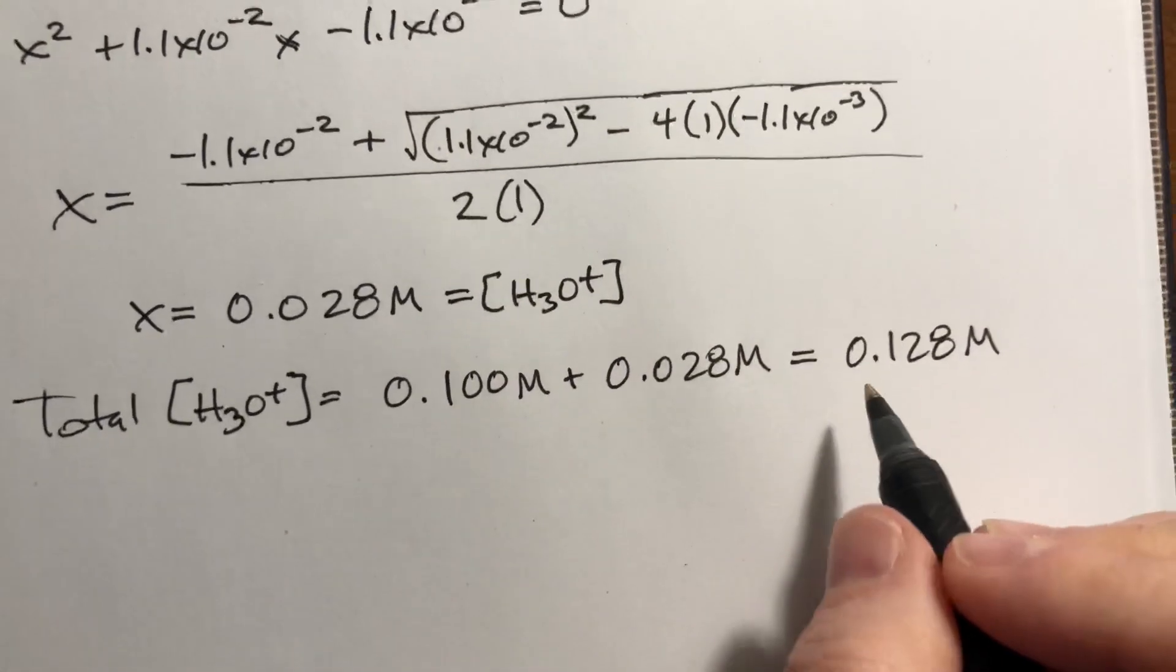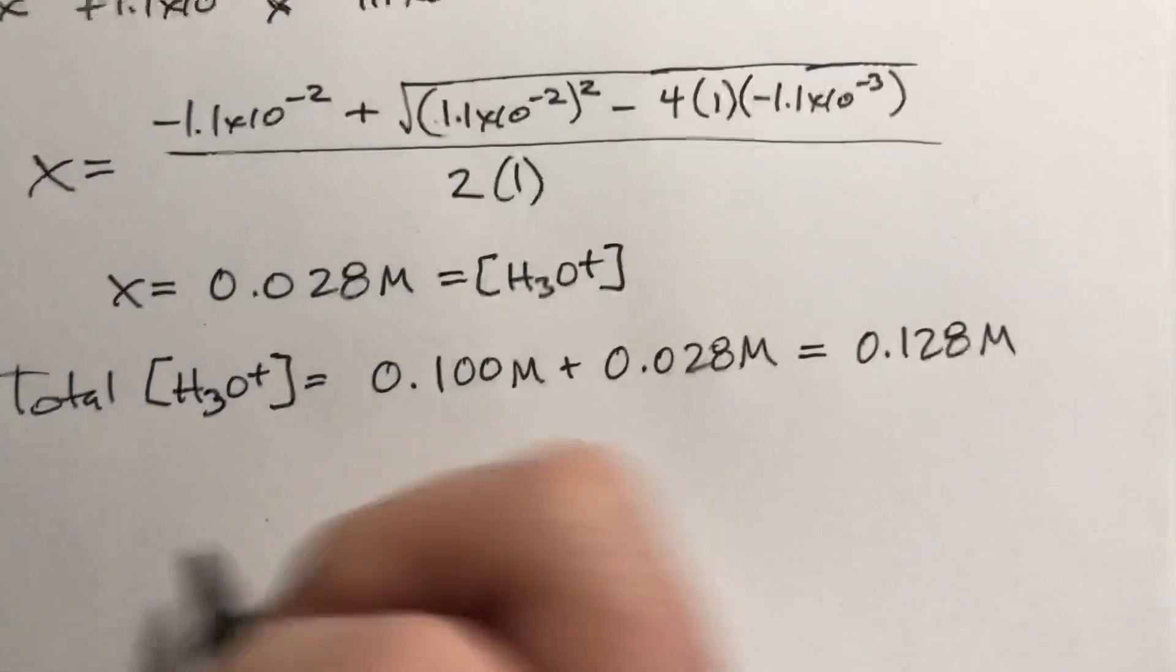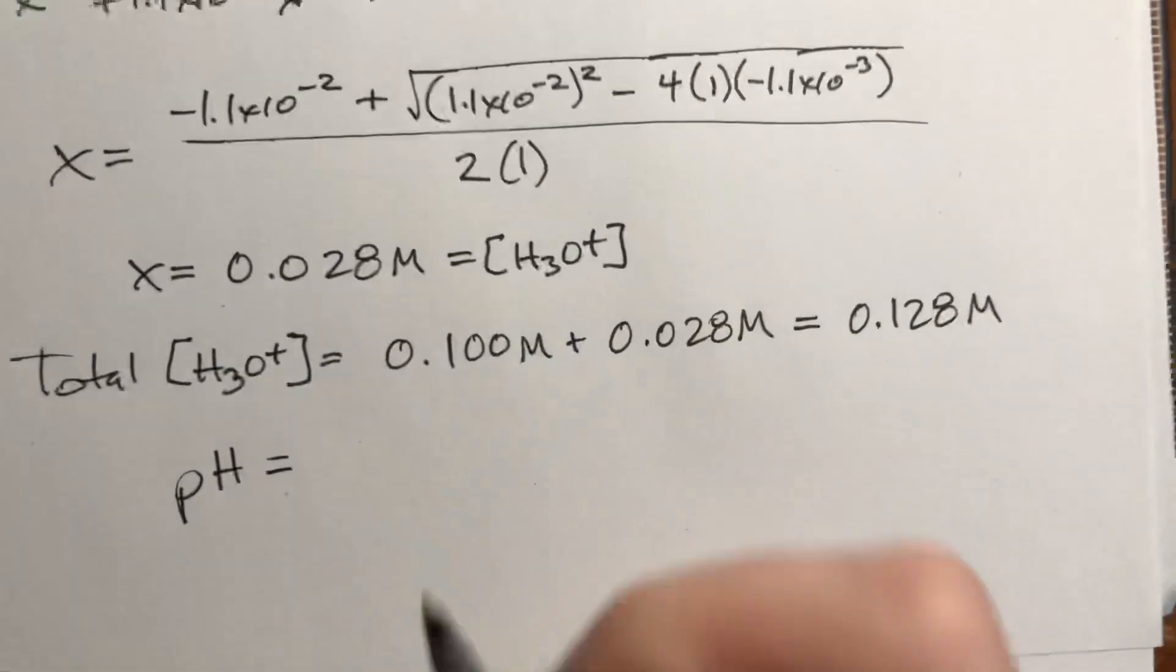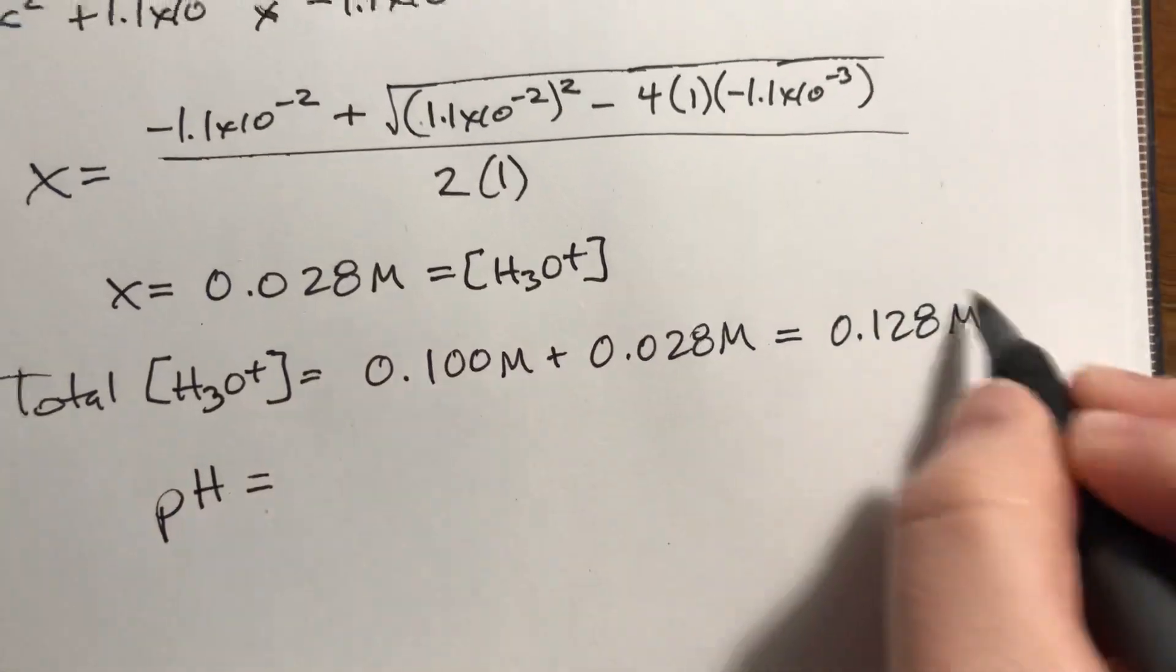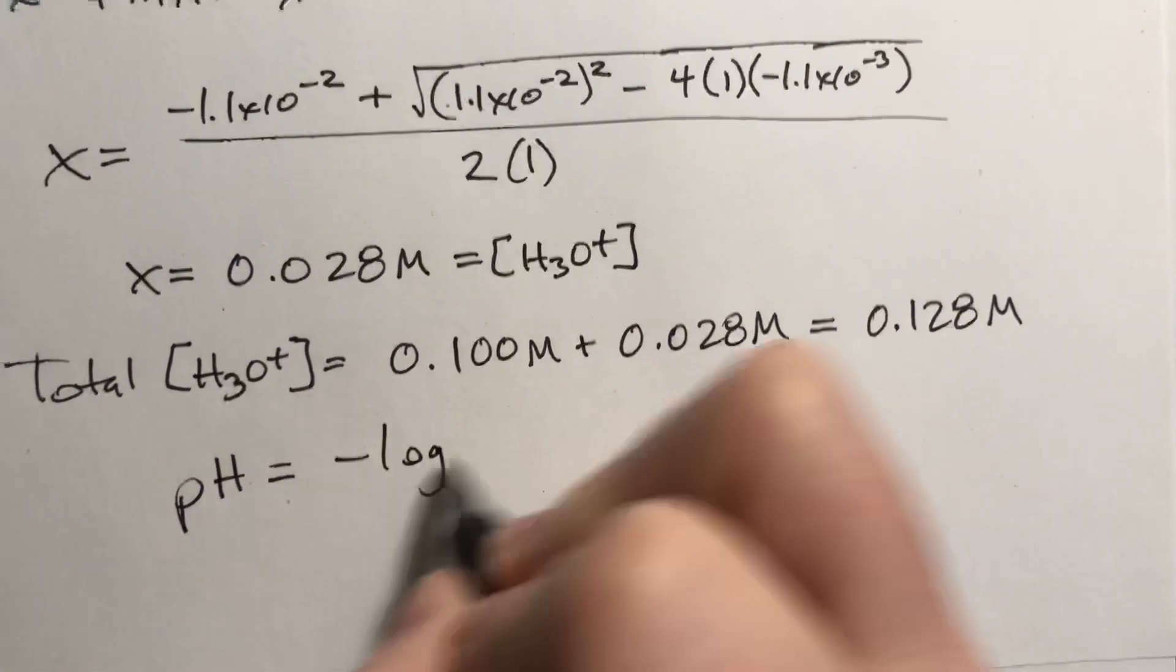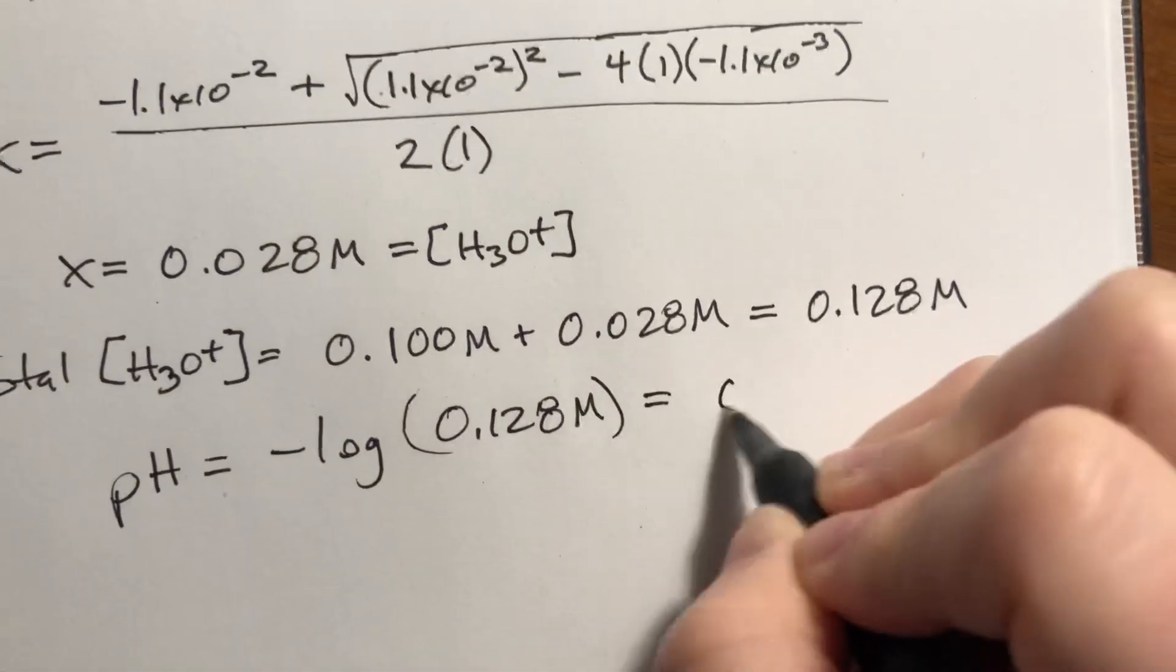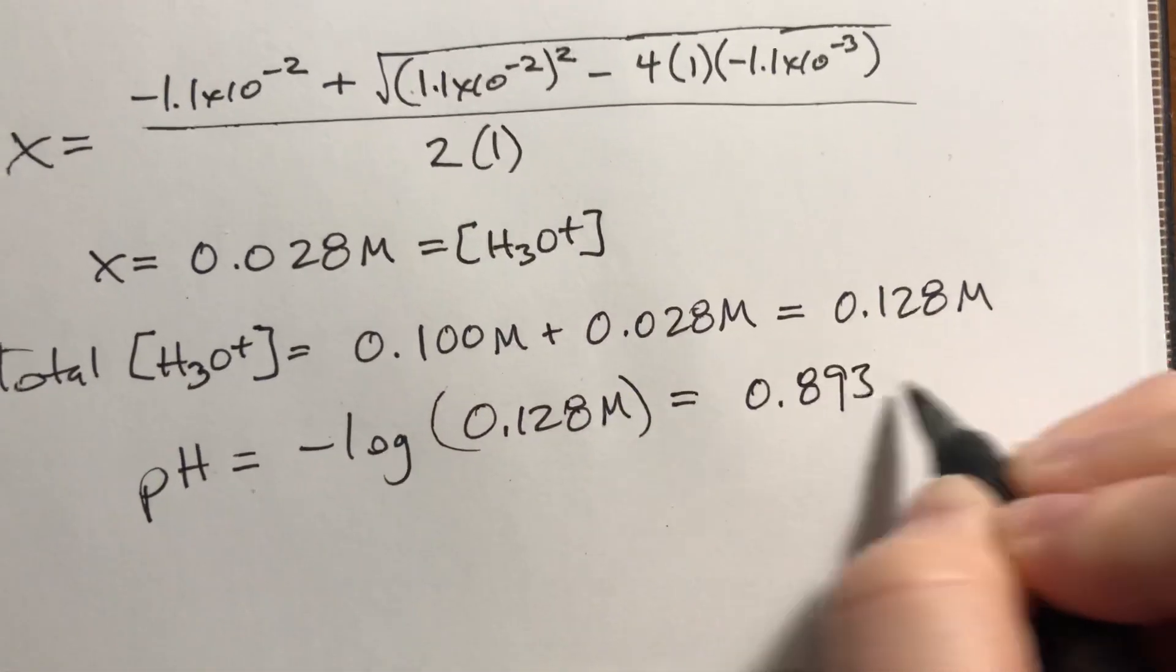This is our concentration of H3O+ for both reactions combined. They're both in the same solution, so we can just visualize them all being there together. So we just take the negative log of this, and the answer comes out to 0.893.